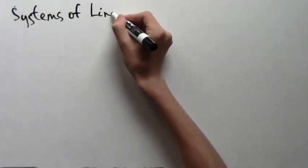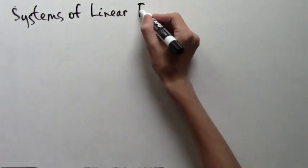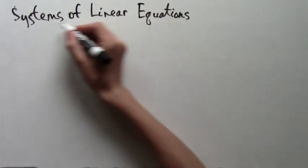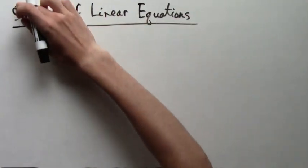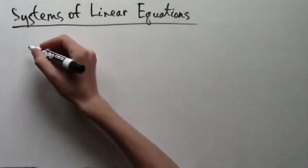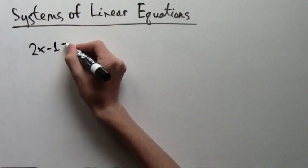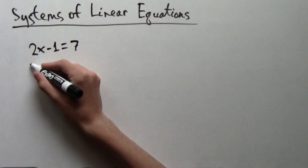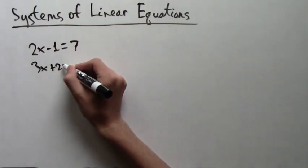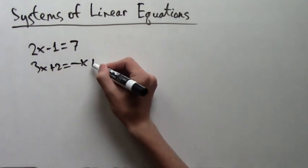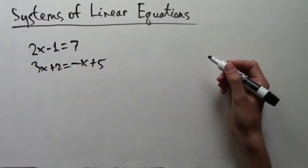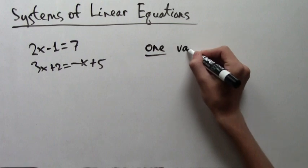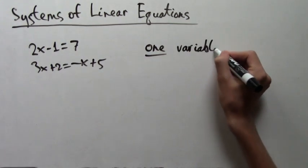First, what exactly do we mean by a system of linear equations? Well, before, we had just ordinary linear equations, and these could look like 2x minus 1 equals 7, or another example could be 3x plus 2 equals negative x plus 5. And what both of these equations have in common is that they each have one variable. That variable is x.